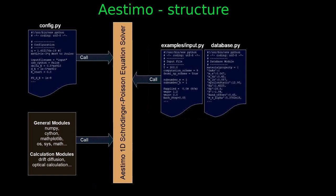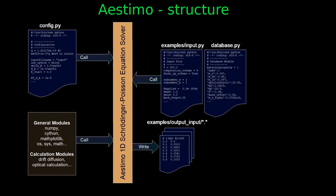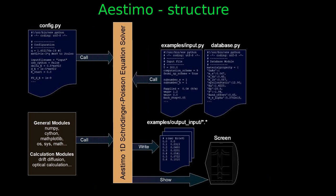The third input is a configuration file where values of default computational parameters are stored. This can easily be changed. The results of computation are written to a set of files in an output directory. These are plain text files with whitespace-separated columns of data. Thanks to that, they are easy to read and can be used in other software for later analysis, such as Gnuplot. Results are also displayed on the screen.